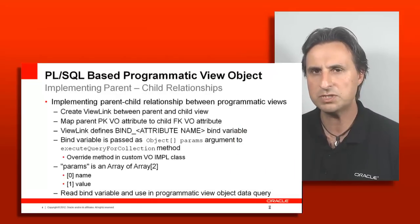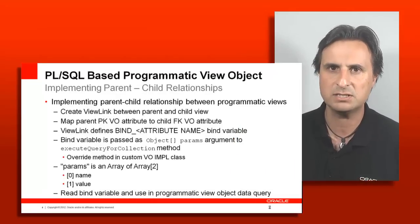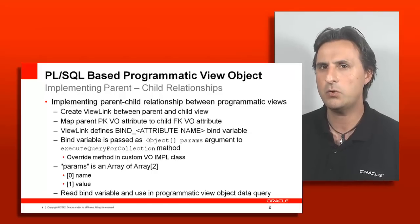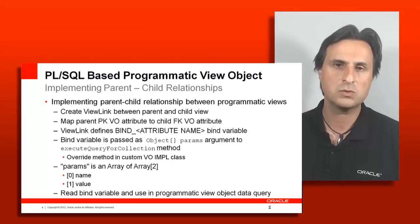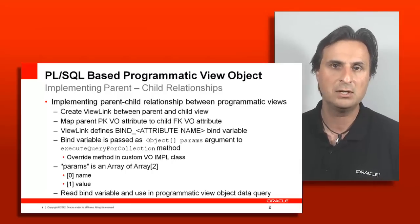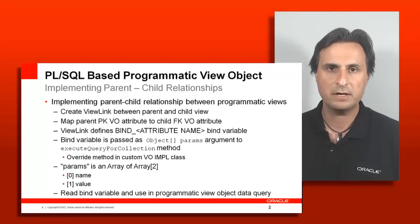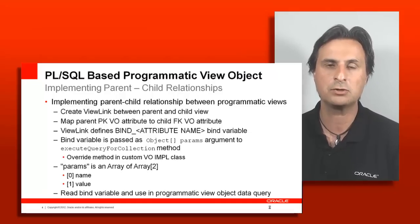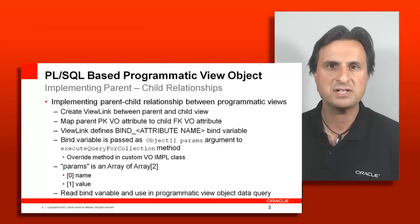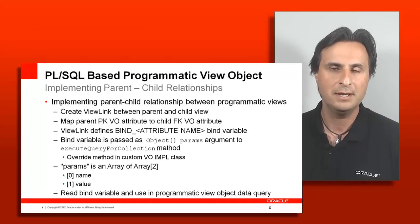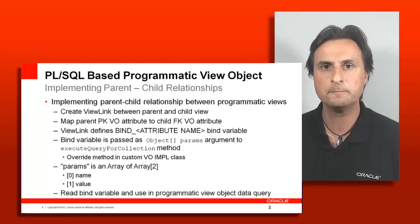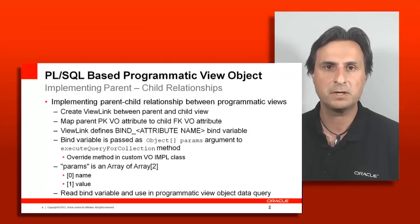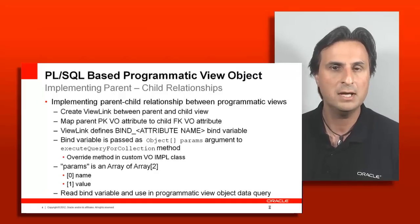There is one more topic: master-detail correlations. You may want to integrate a stored-procedure-based view object into a parent-child relationship, and there are two use cases. The first is where your stored-procedure-based view object becomes the parent to a SQL-based child. You define a view link between your view object and a SQL-query-based view object. The good news is there's nothing for you to do — it works out of the box, because the SQL-based child will understand it needs to get the selected parent's value via a bind variable and query data accordingly.